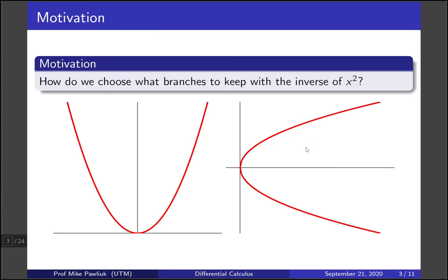Let's start with some motivation. How do we choose what branches to keep when we're computing the inverse of x squared? So here's a picture of x squared, and when we reflect it across the line y equals x, we get this shape.